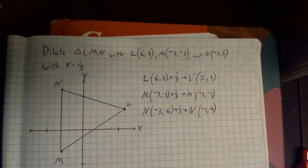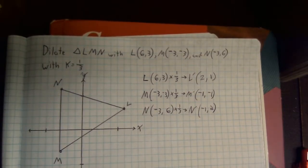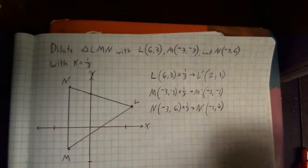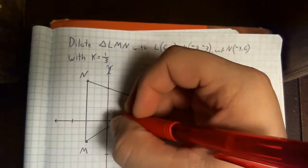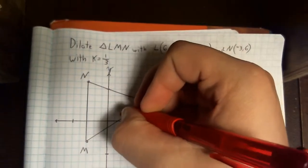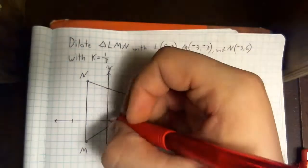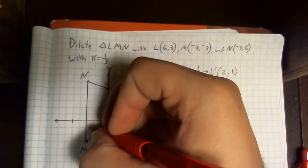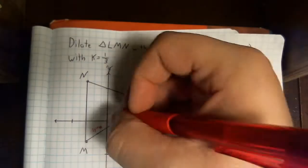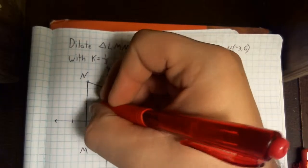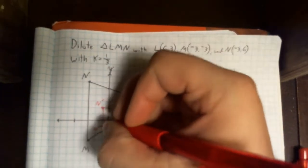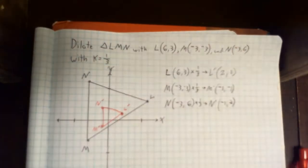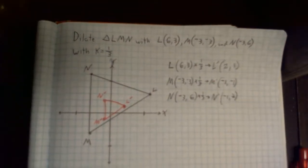So let's check it out. Crossing our fingers right now that it ends up as a smaller triangle because that's what the instructions told us it should be. So 2, 1, that's L prime, negative 1, negative 1, M prime, and negative 1, 2, N prime. Hey, look at that, guys. It ended up as a smaller triangle, which is exactly what we were hoping for.